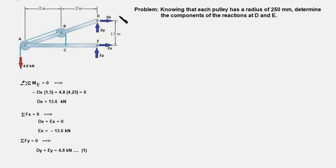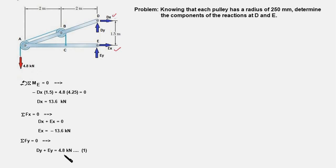We have obtained DX and EX, but DY and EY remain. Writing the force balance in the y direction gives DY plus EY minus 4.8 kilonewtons equals zero, and we cannot proceed further. Therefore, we must dismember the entire frame and write equilibrium equations for one of the members.